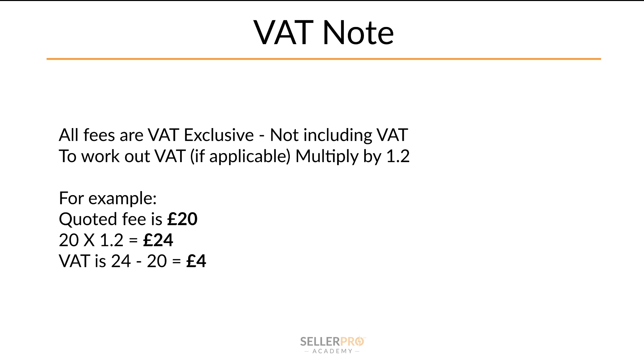The first thing we're going to look at is a little note on VAT. I'm in the UK, and in the UK we have VAT — value added tax. If you're not in the UK, you may not have this. It's really important to mention that all the fees I'm looking at today, anytime I mention a price in pounds, those are VAT exclusive, meaning VAT needs to be added on top. For example, if something is £20, then £20 times 1.2 gives you £24 — so VAT is £4. Whenever Amazon in the UK talks about costs, they always give VAT exclusive prices, so remember to multiply by 1.2.